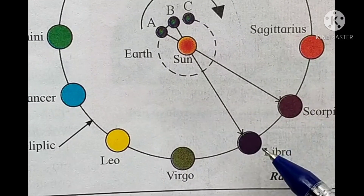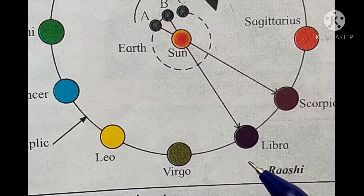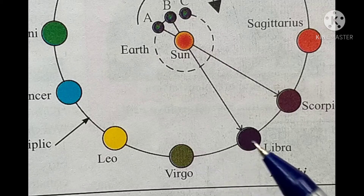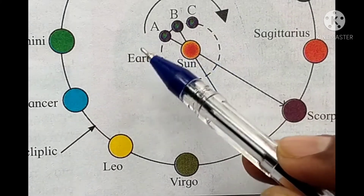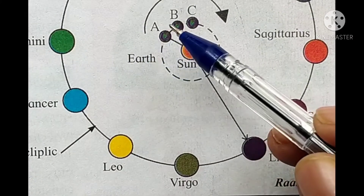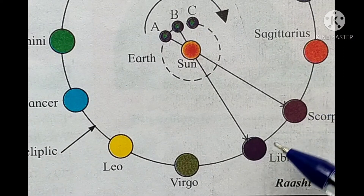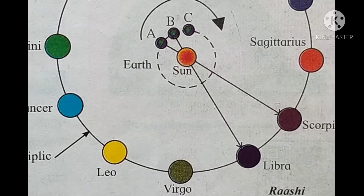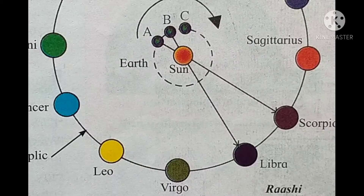When the sun enters a particular zodiac sign, the sun appears to be in that zodiac sign as seen from Earth. This is how the apparent movement of the sun through the zodiac signs is understood.